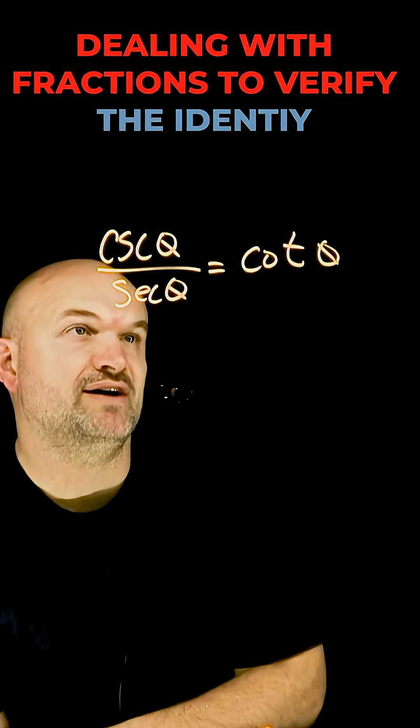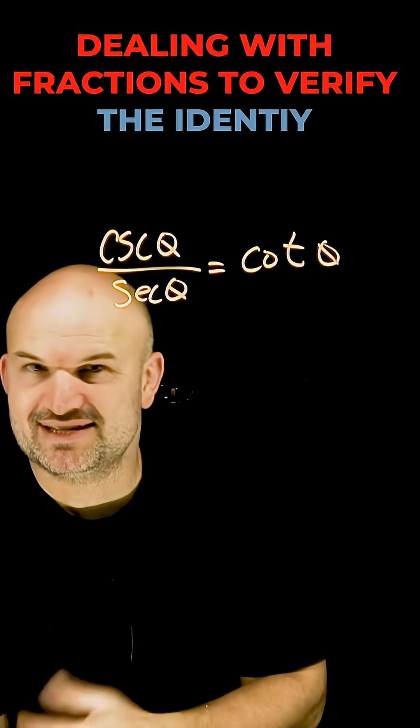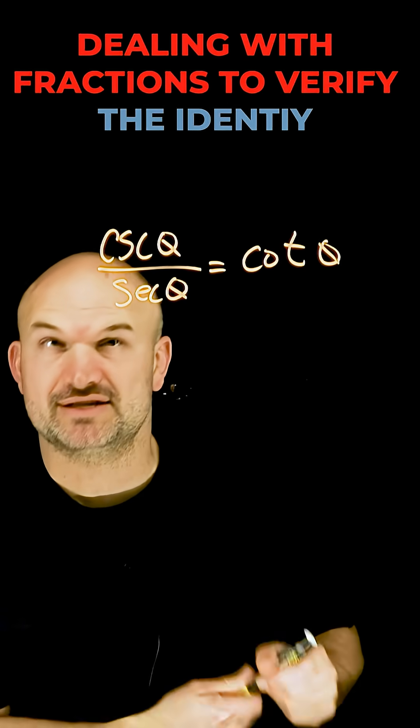A tip that students usually remember when verifying trigonometric identities and they don't see a sine and cosine is to convert everything over to sines and cosines.